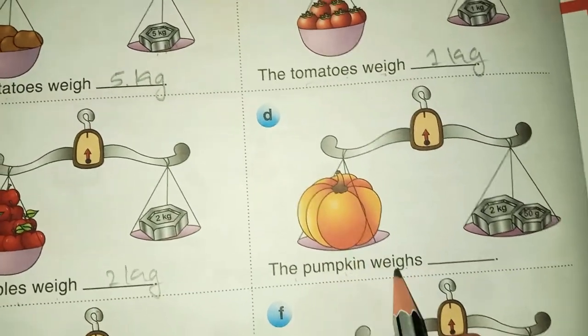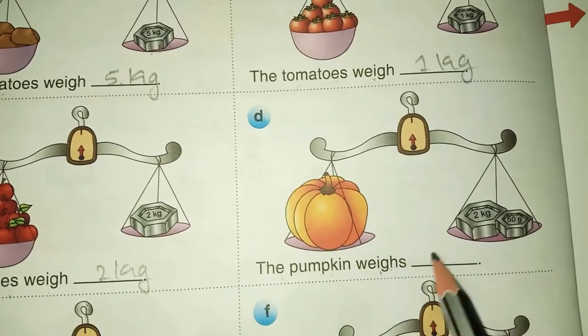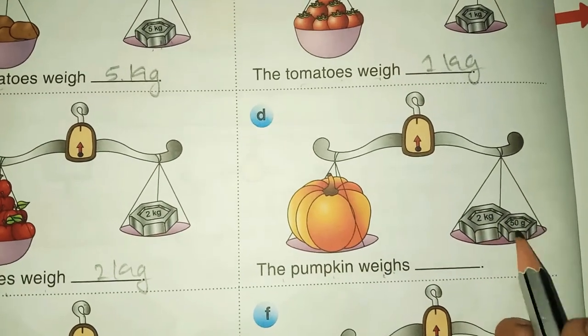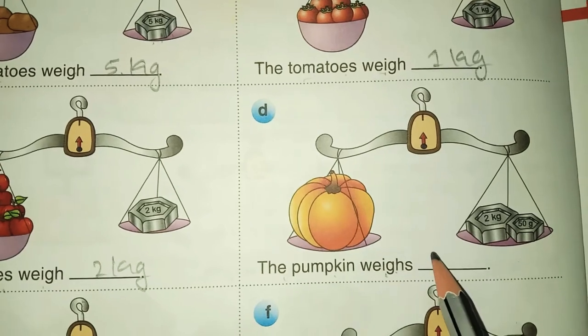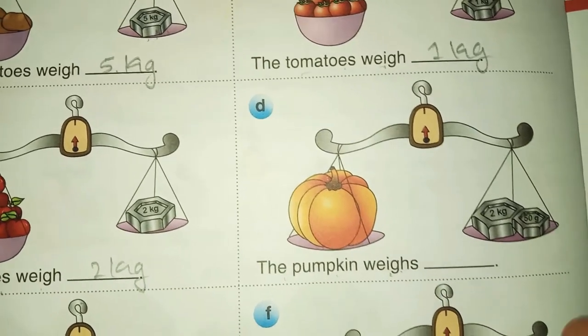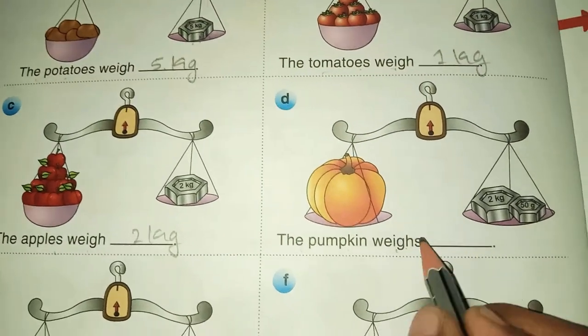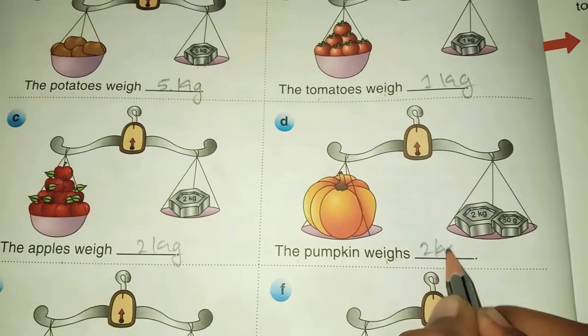The pumpkin weighs 2 kg plus 50 gram, means 250 gram. Not gram. The pumpkin weighs 2 kg.